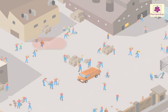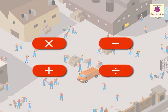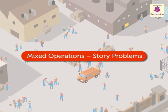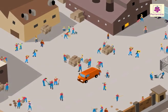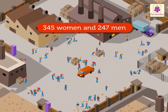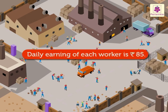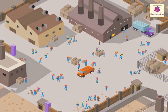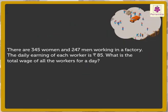We have already studied how to solve different operations separately. Today we are going to use more than one operation to solve a single story problem. Let us start. There are 345 women and 247 men working in a factory. The daily earning of each worker is 85 rupees. What is the total wage of all the workers for a day?